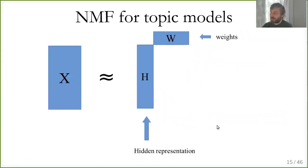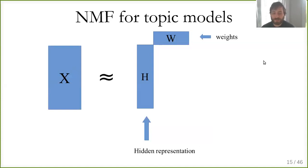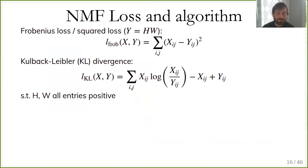Now let's move to a different model called NMF — Non-negative Matrix Factorization. Again we try to find a factorization of data matrix X into two matrices, traditionally called H (hidden representation) and W (weights). What makes NMF special is that we restrict both H and W to be non-negative — all entries are either zero or positive. In terms of optimization this is quite a complicated constraint.